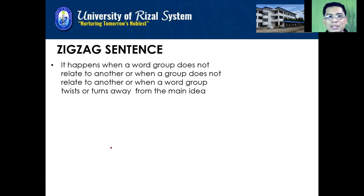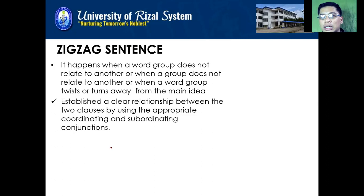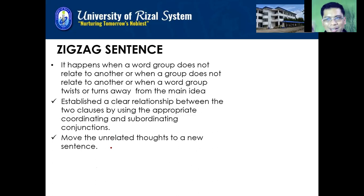A zigzag sentence happens when a word group does not relate to another, or when a word group twists or turns away from the main idea — meaning the ideas in a sentence are not connected. To correct this, you have to establish a clear relationship between the two clauses by using the appropriate coordinating and subordinating conjunctions, which I have already introduced. You can also move the unrelated thoughts to a new sentence by chopping the sentence — that can solve the problem.